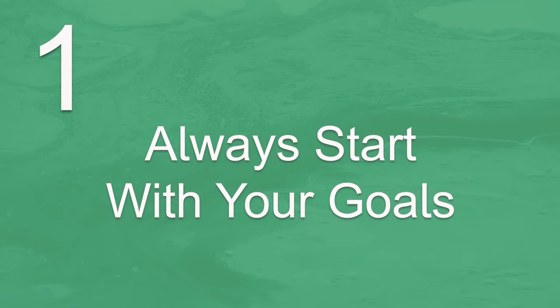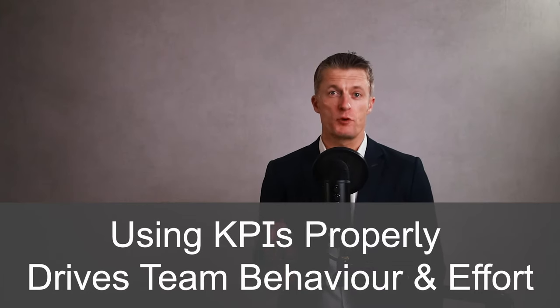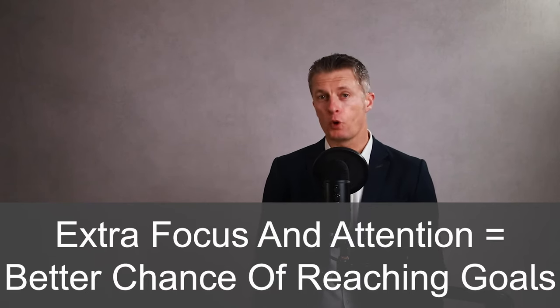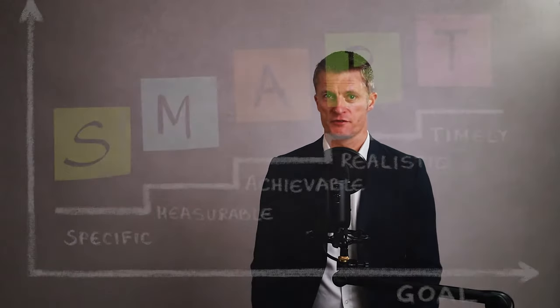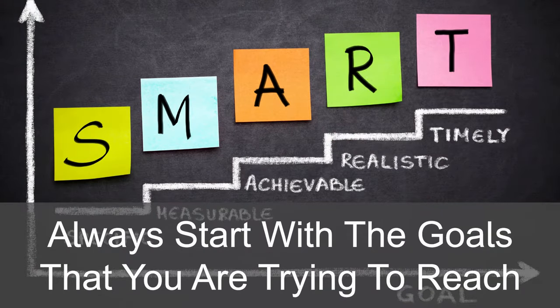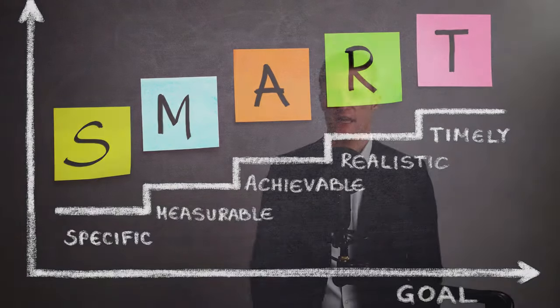The first step in how to develop key performance indicators is to always start with your goals. Using KPIs properly drives team behaviour and effort. Focus and attention on the important goals increases the likelihood of reaching those goals, which is obviously good for everyone. This could be implementing the company strategy, realising departmental medium-term goals, or day-to-day goals. Always start with the goals that you're trying to reach — the result you intend to get to when developing key performance indicators.